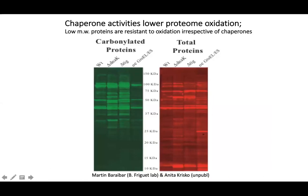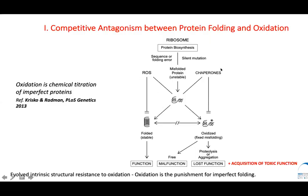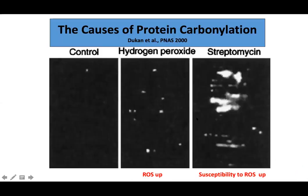The same can be seen in Anita's experiments looking at carbonylated proteins in 1D gels: there's an increase in deleting either DnaK or TIG, and a reduction in protein carbonylation by overexpressing GroEL and GroES chaperones. This confirms the idea behind the cartoon of competitive antagonism — that to produce deleterious phenotypes, one needs oxidation to make the misfolded state irreversible and therefore phenotypic in aging and diseases.